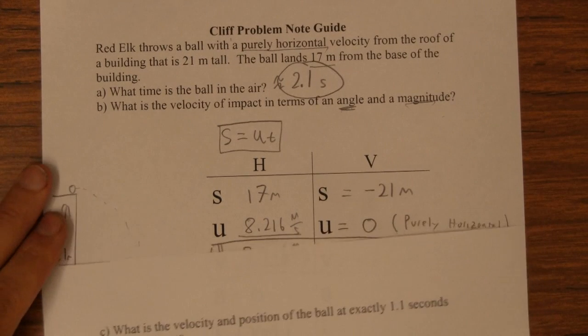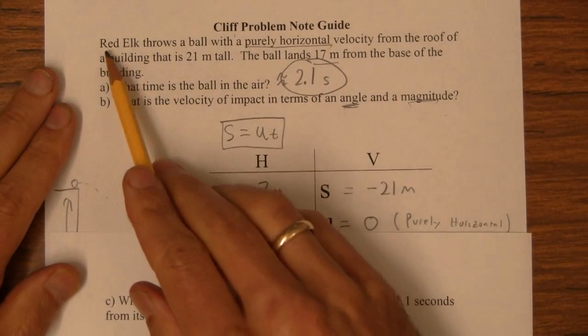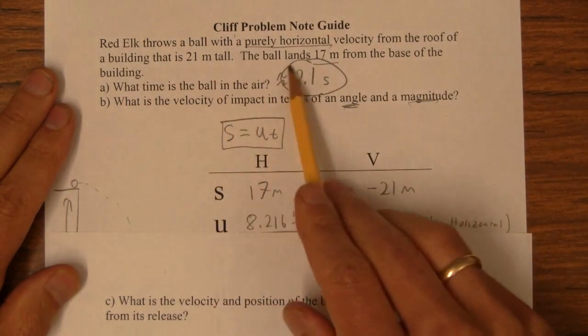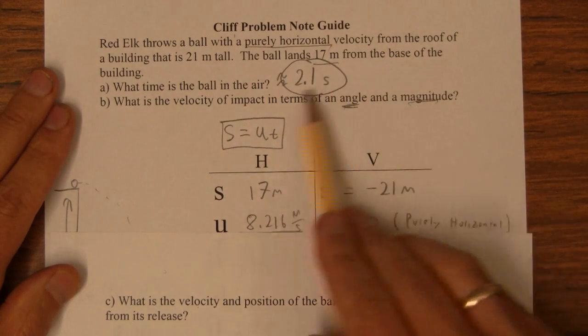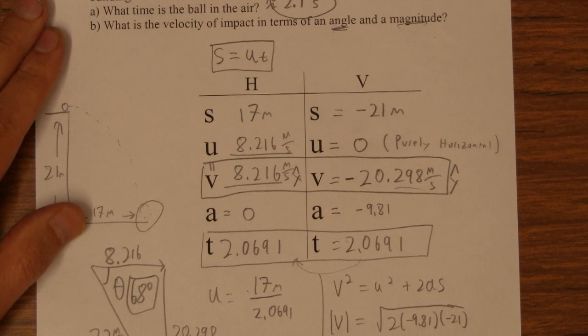Okay, in this video I'm going to solve part C of the cliff problem. So the problem that we're solving here is Red Elk throws a ball with a horizontal velocity from the roof of a building that's 21 meters tall. The ball lands 17 meters from the base of the building. We've already answered A and B in the previous video, all of this stuff, right?